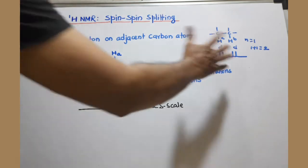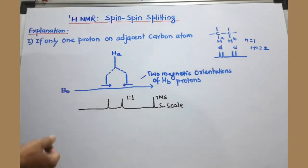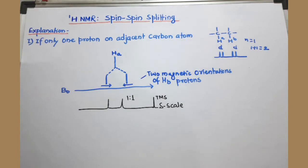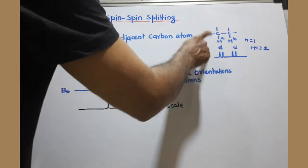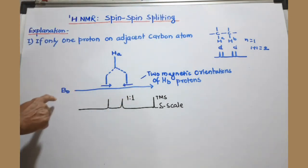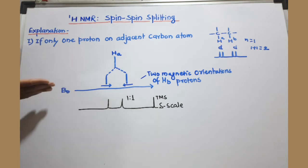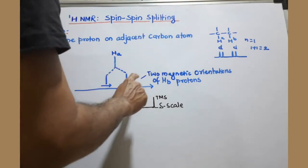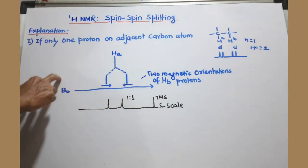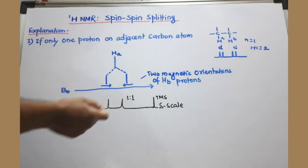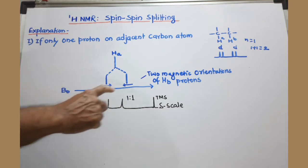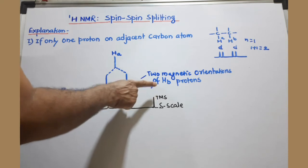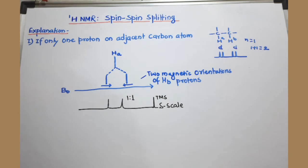Now we are going to explain why this has happened — why we get a doublet for this proton and a doublet for that proton. We know from our first NMR spectroscopy video that protons act as tiny bar magnets in the presence of an external magnetic field. Suppose B0 is the external magnetic field. These two protons are acting as tiny bar magnets and taking two orientations. In the absence of an external magnetic field, they can take any orientation in space, but in the presence of B0 they are restricted to two orientations only: aligned with, or opposite to, the applied magnetic field.